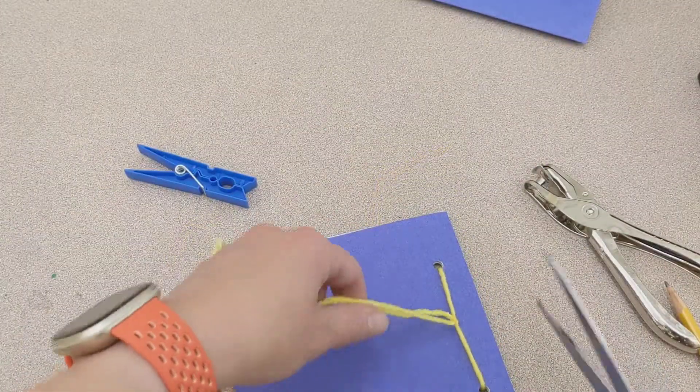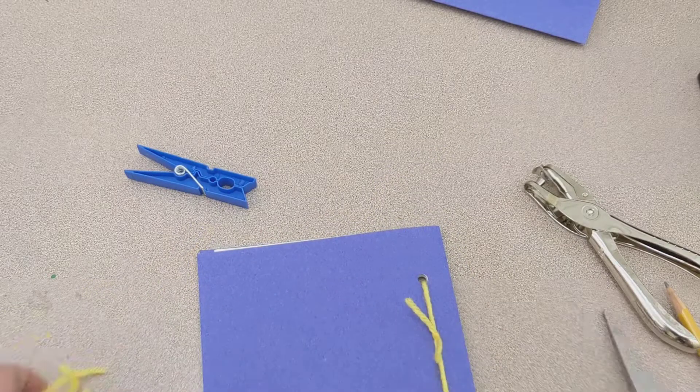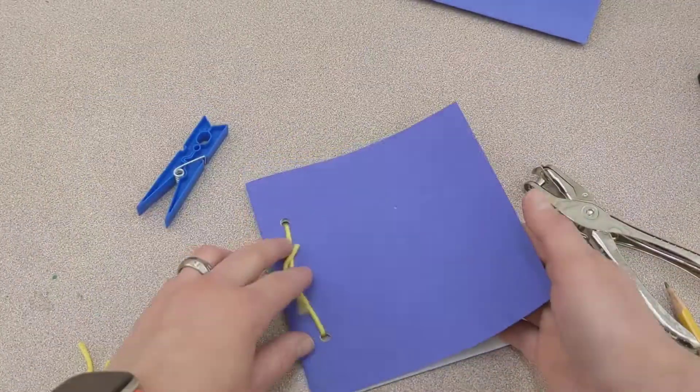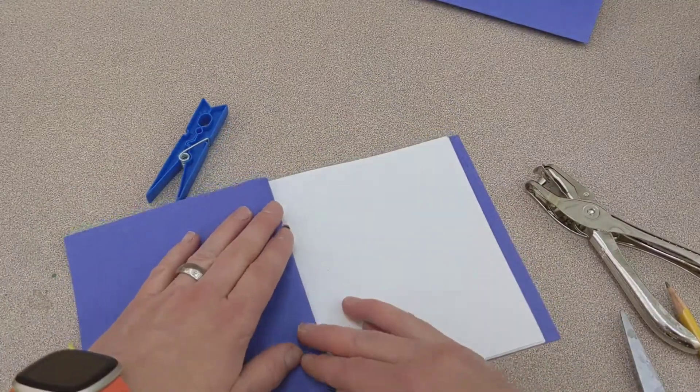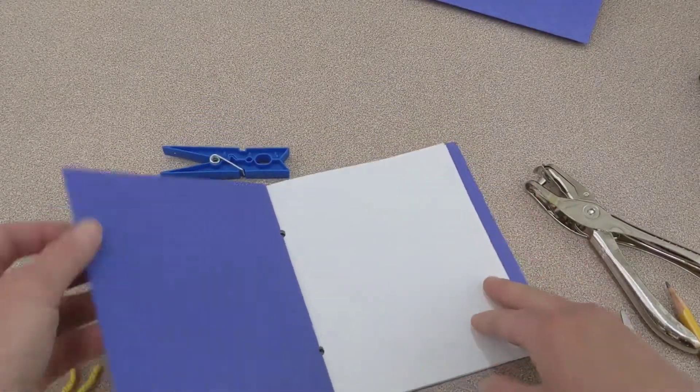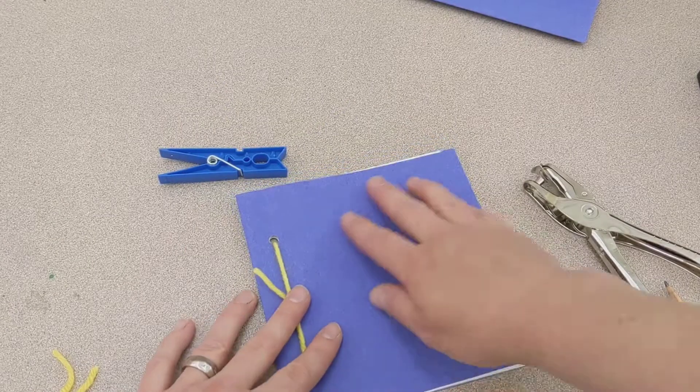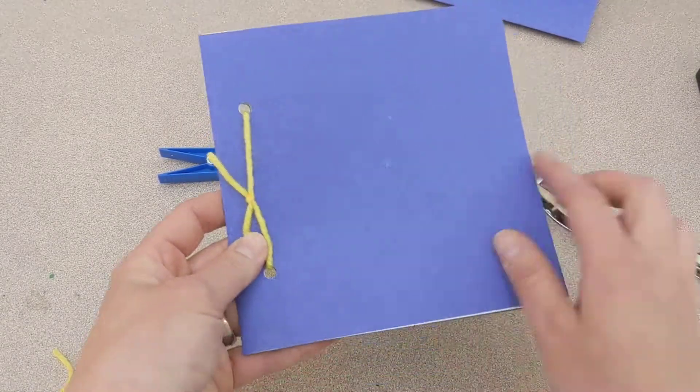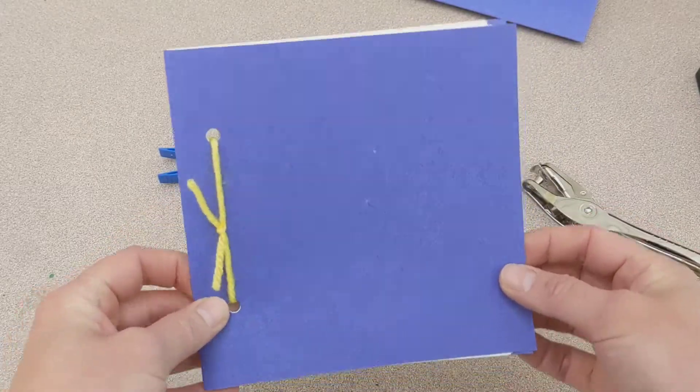Then I'm going to cut my extra string off, and I now have a booklet. You can fold this edge back. You can draw on the inside, write on the inside, decorate your cover. If you want to cut things out and glue and do collage, you could do that. You could use markers to write, but now you have a blank book.